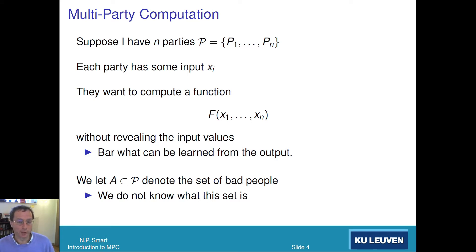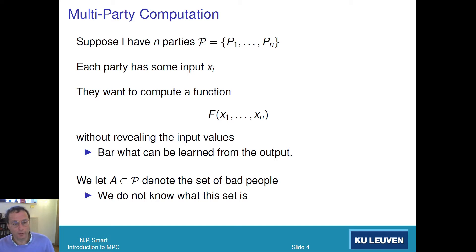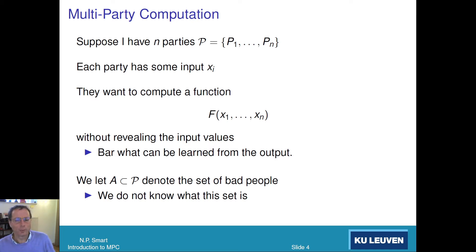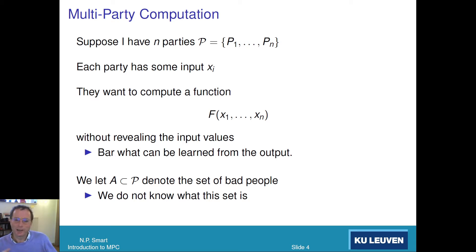For example, if we were computing the average height and we had two parties — if I give my height into the protocol and you give your height, then if we both learn the average, it's quite easy, given my height, to work out what your height was. But if we had three parties and I was trying to work out your height, but I only saw the average height of me, you, and someone else, it's a bit more difficult.